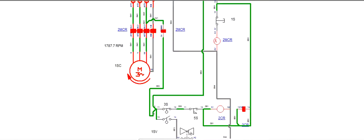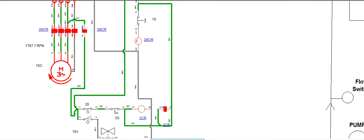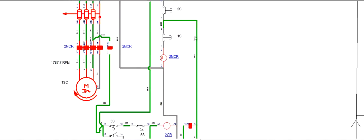Then it is going to a flow switch, like I showed you — this is the flow switch, high level switch, low level switch. And there is another solenoid. This solenoid is controlling when it is in auto mode.